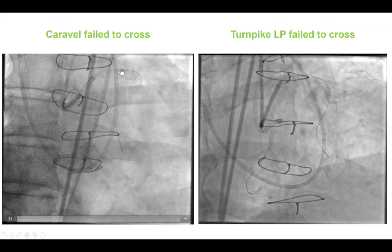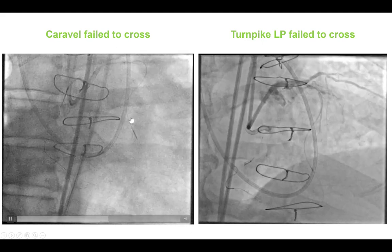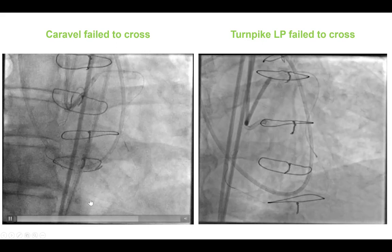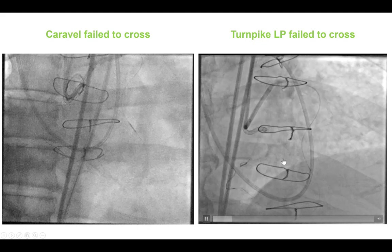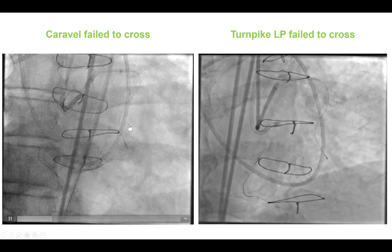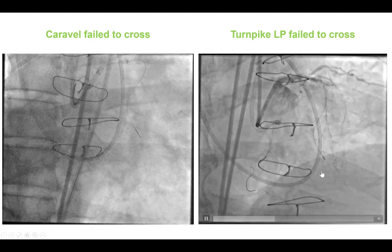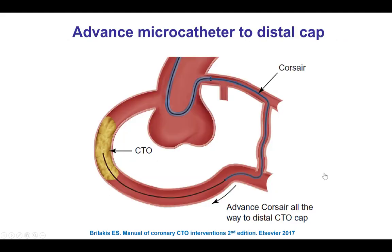Unfortunately, we were unable to advance a Caravel microcatheter over this guidewire, possibly because the septal collaterals were small. We changed to a Turnpike LP, and this also failed to cross. This is one not uncommon problem — the wire goes through the collateral but the microcatheter fails to follow.